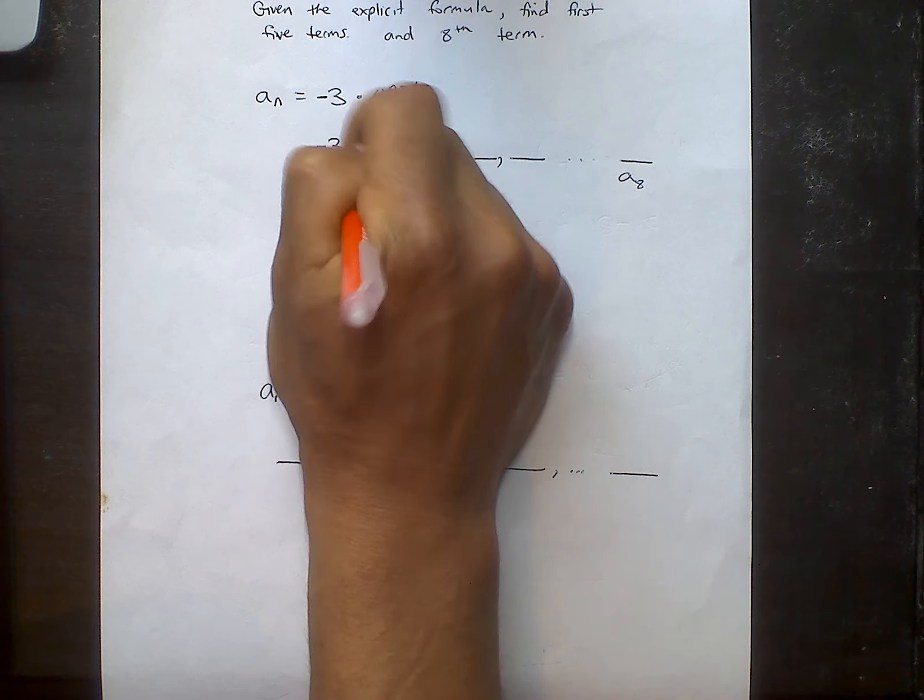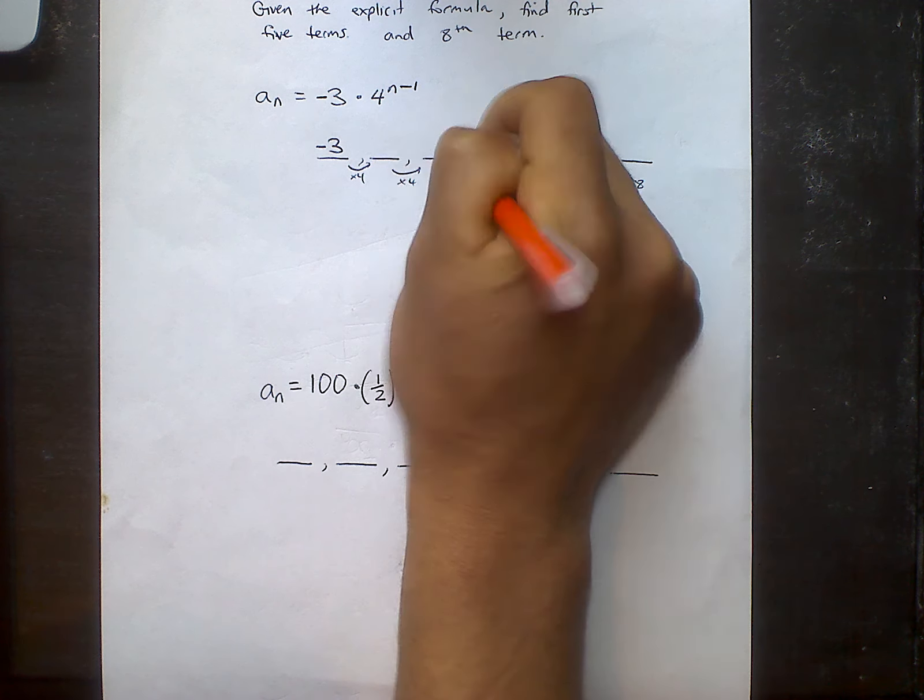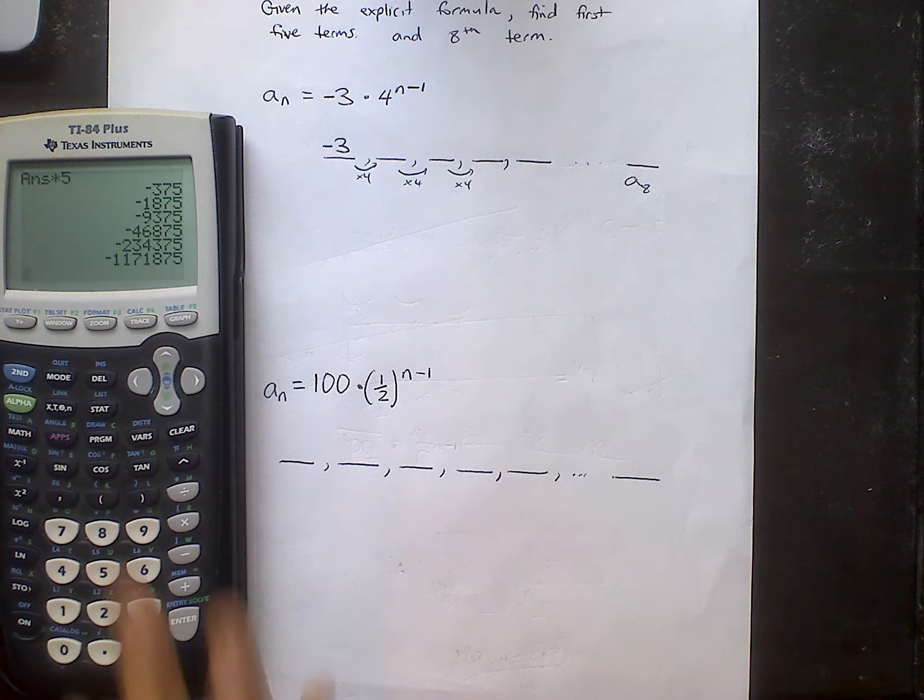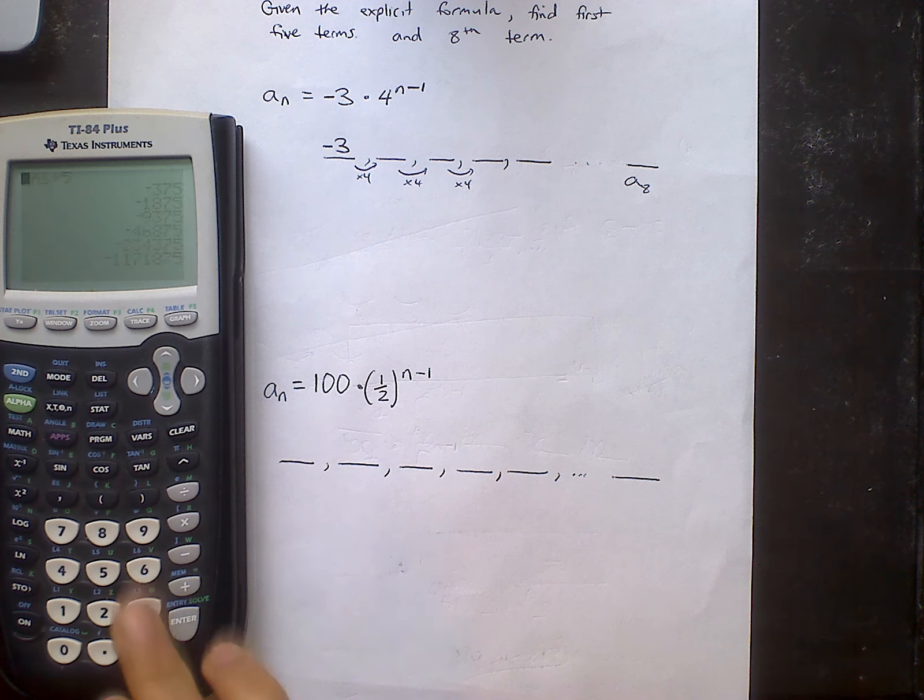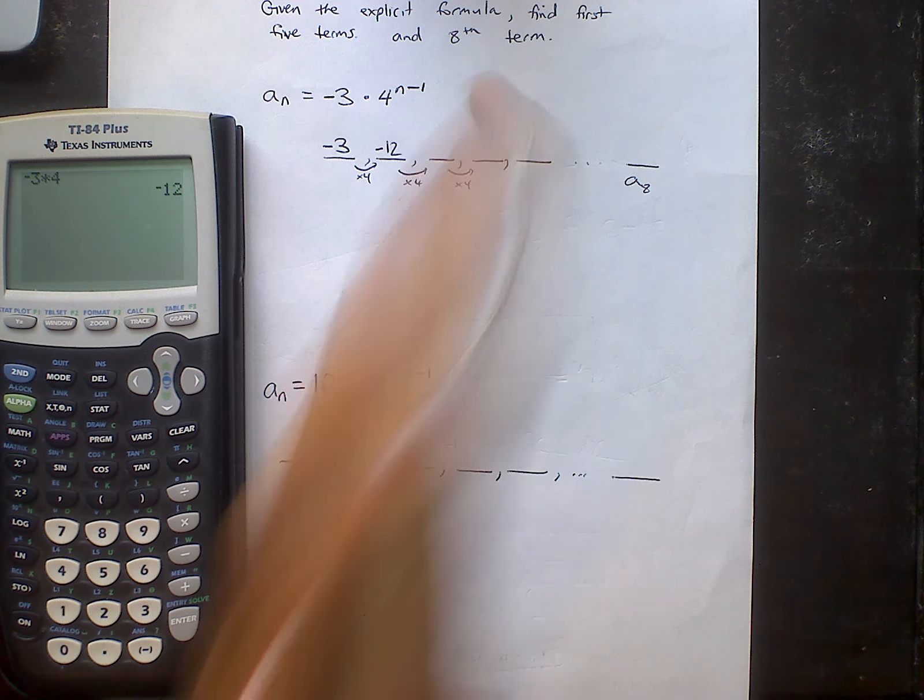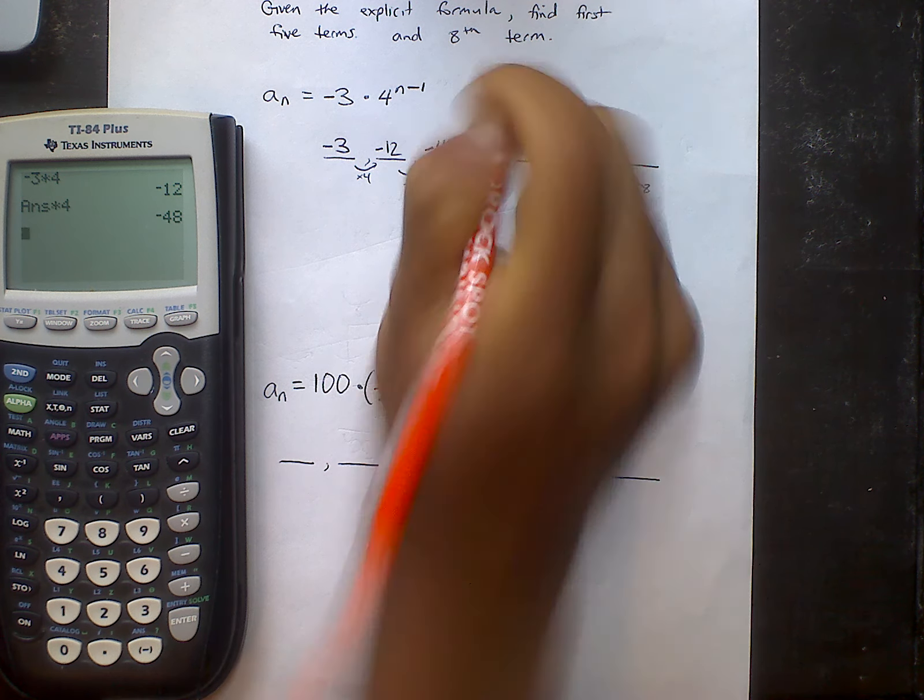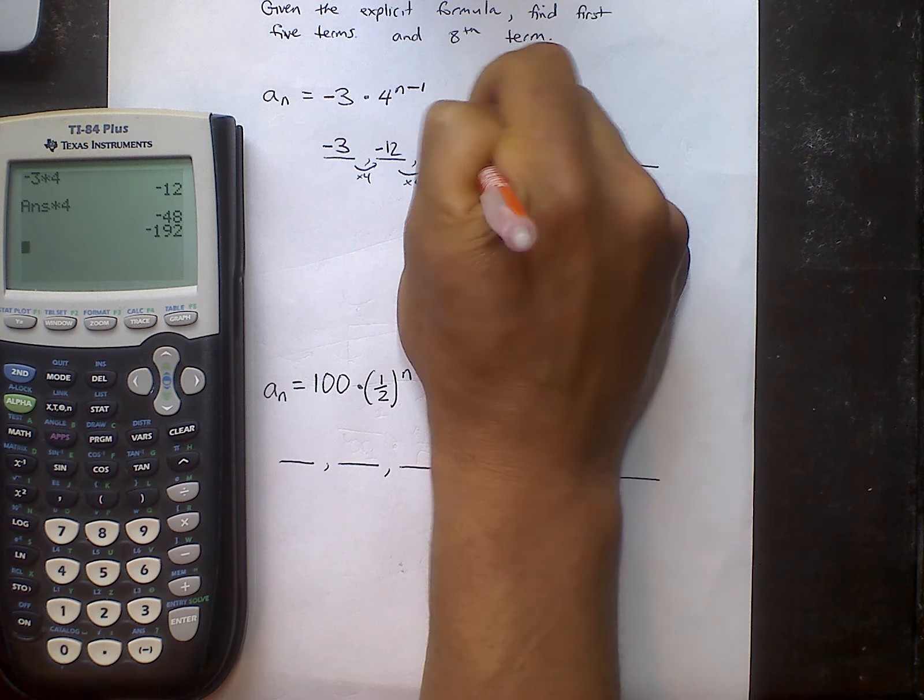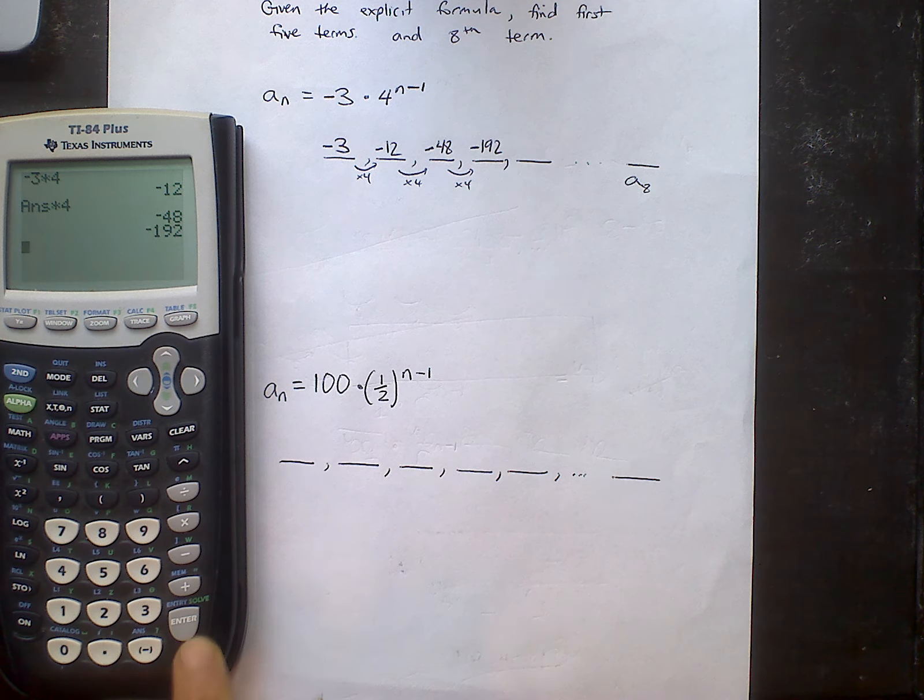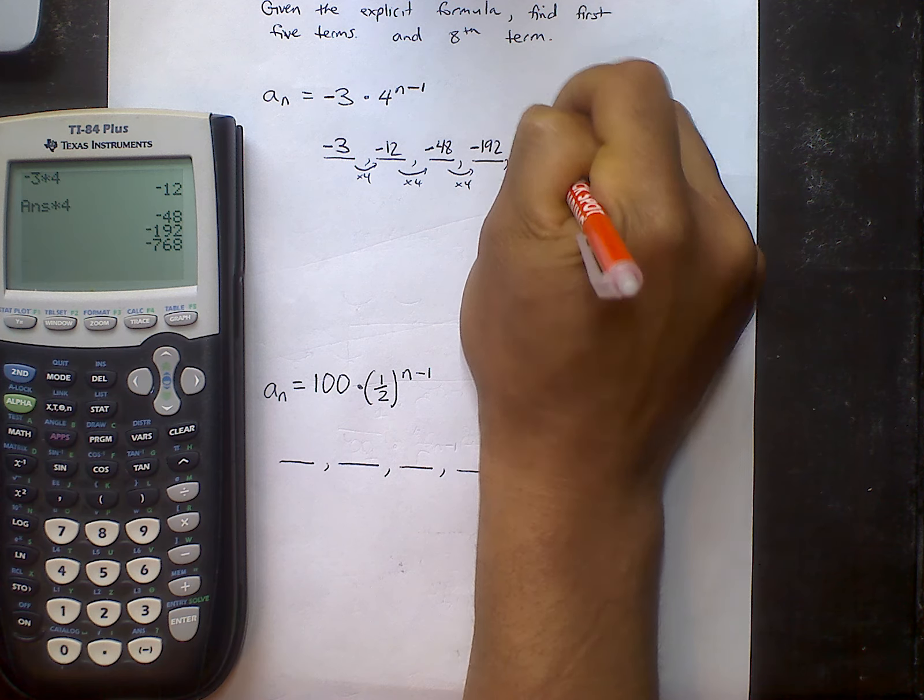So I simply just have to multiply by 4 each time to find the next terms. Negative 3 times 4 is negative 12 times 4. Again, negative 48, negative 192, negative 768.